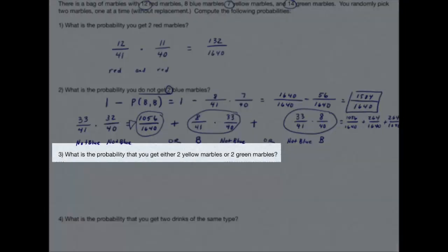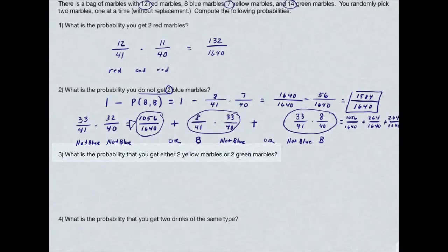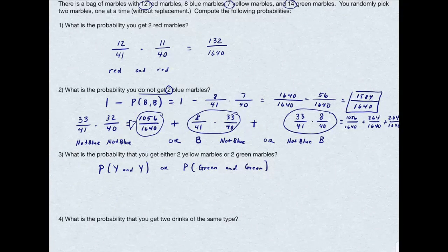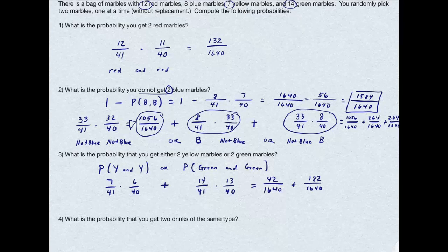Question number 3. What's the probability I get either 2 yellow marbles, or 2 green marbles? That's the probability I get yellow and yellow, or the probability I get green and green. The probability my first marble is yellow is 7 divided by 41, times 6 divided by 40. Again, and translates to multiplication. The or translates to addition, because these are mutually exclusive, or disjoint events. And the probability of me getting a green marble is 14 divided by 41, and then the second one being green is 13 out of 40. Those two fractions are 42 divided by 1640, plus 182 divided by 1640, which equals 224 divided by 1640.